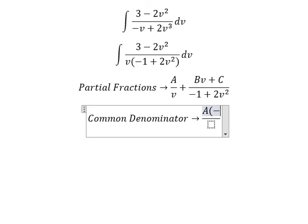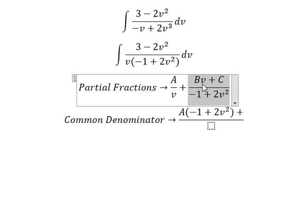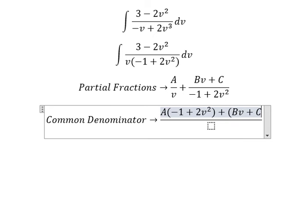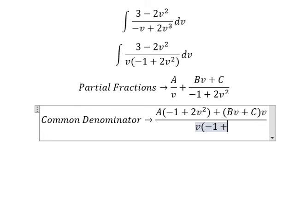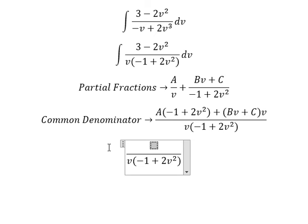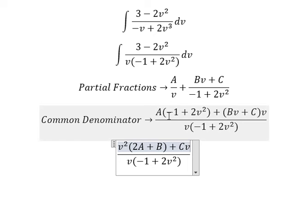Capital A multiplied by negative 1 plus 2V squared. This one is missing about V. Next we need to arrange based on the terms of V. About V squared, we have 2 with A. B with V gives B. About V, we have only C. About the number, we have negative A.